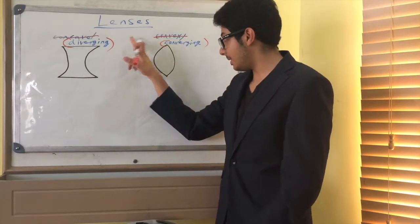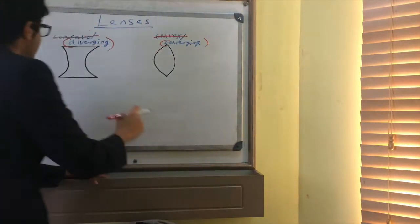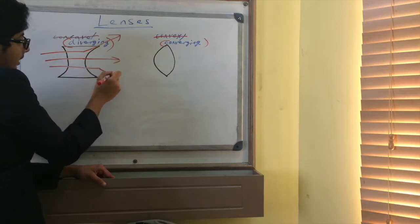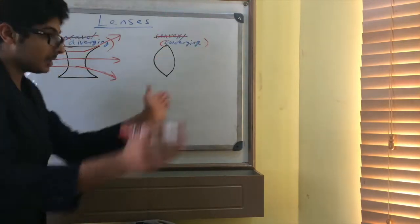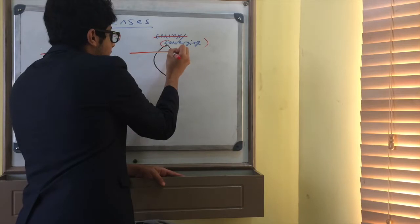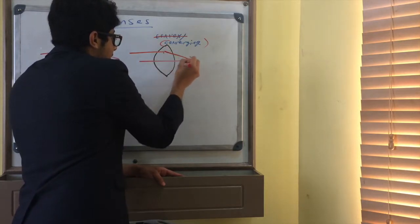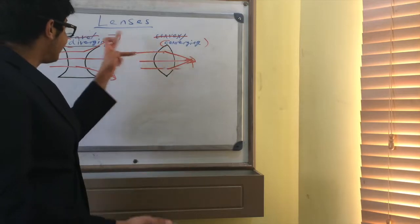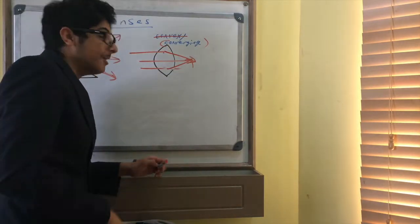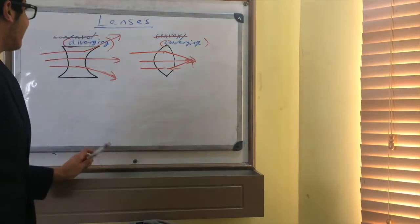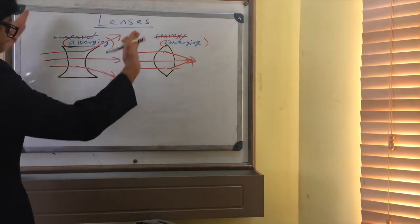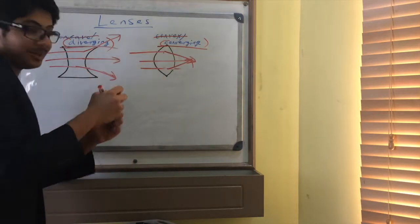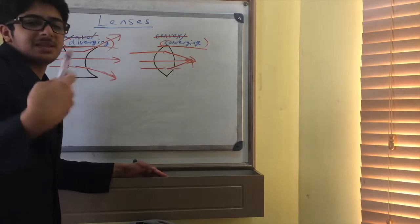You can relate the names to what the lenses actually do. The diverging lens refracts light rays away from a single point, so the light rays are diverging. The converging lens refracts light towards a single point, so the light rays converge. If you don't know what converging and diverging mean, look them up. You could say for the concave lens it looks like the lens is caving in on itself, but the diverging and converging names are the easiest way to remember the difference.